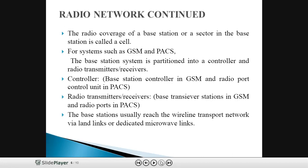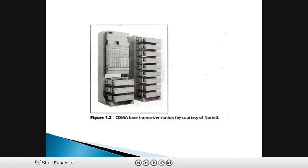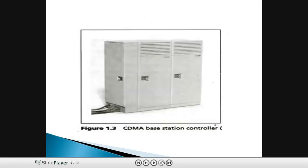The base stations usually reach the wireline transport network via land links or dedicated microwave links, because telephone links involve high-speed data that normal coaxial cables cannot transmit. Dedicated microwave links or land links are used to transmit this high-speed data, as normal coaxial cables cannot carry such high speeds. This is illustrated in the CDMA base transceiver station figure.